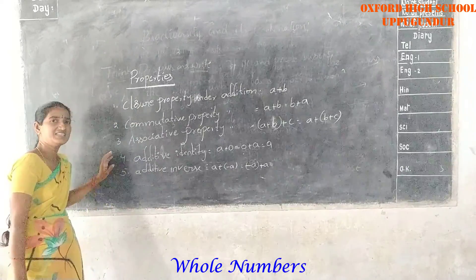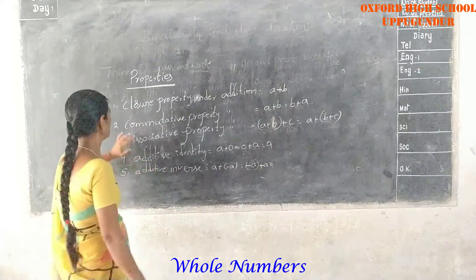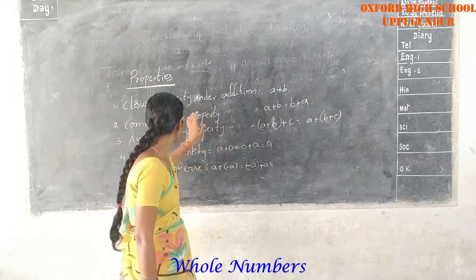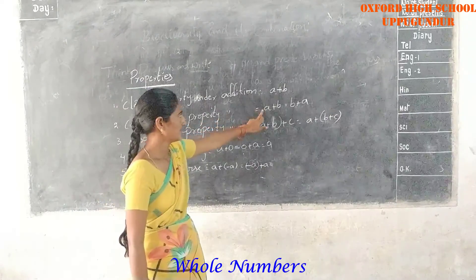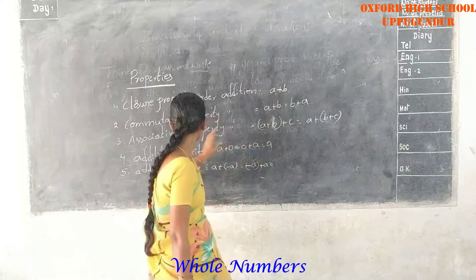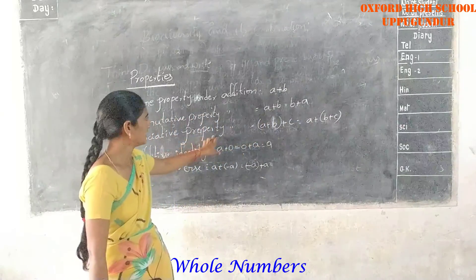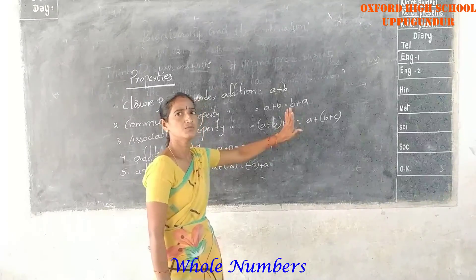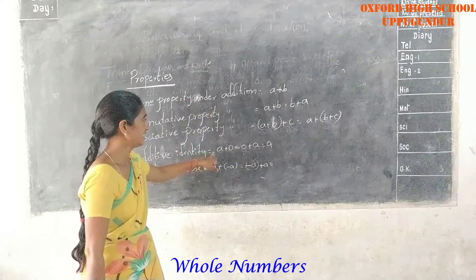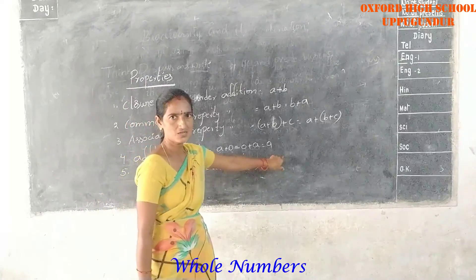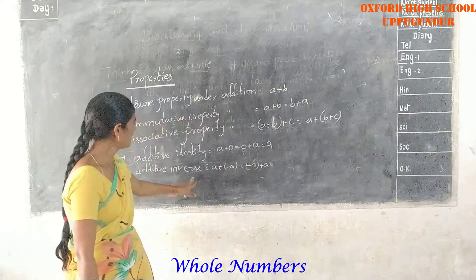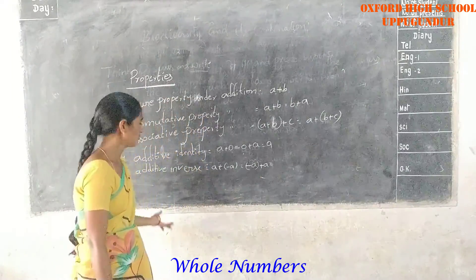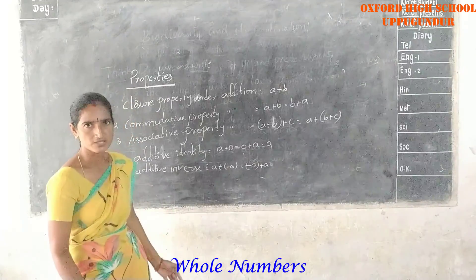These five properties are your lesson. Closure property under addition: A plus B. Commutative property under addition: A plus B is equal to B plus A. Associative property: A plus (B plus C) is equal to (A plus B) plus C. Additive identity: A plus 0 is equal to A. Additive inverse: A plus (minus A) is equal to 0.